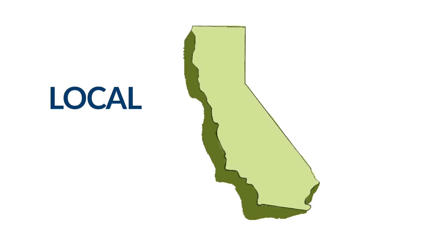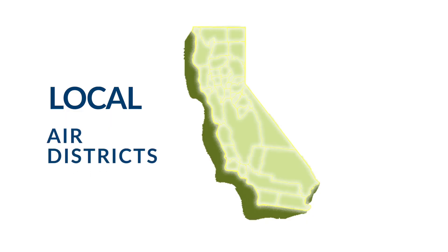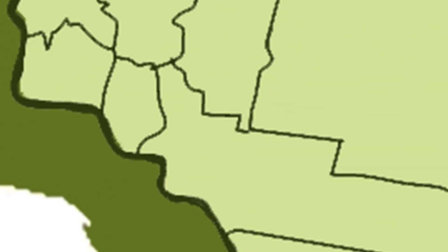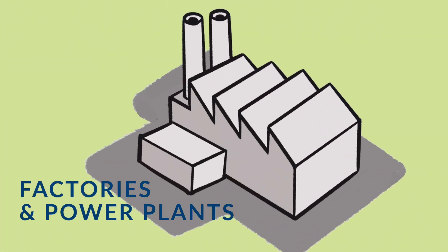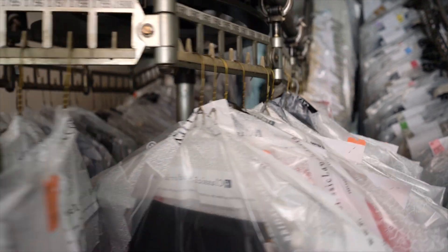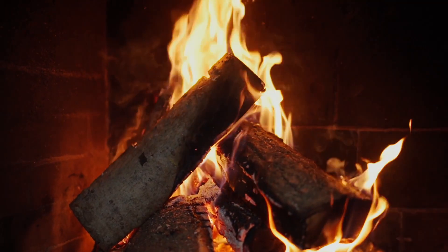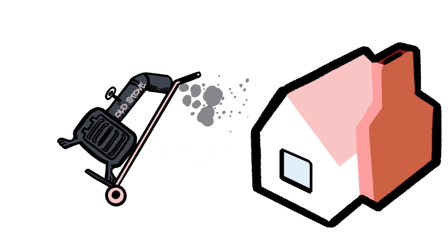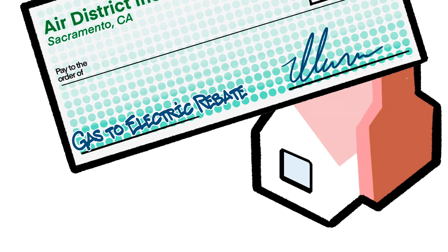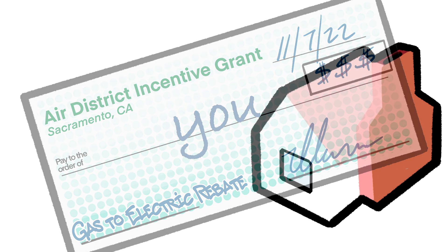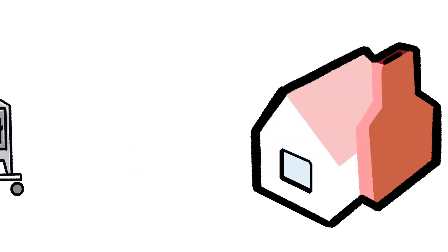At the local level, 35 air districts are responsible for limiting air pollution from local sources, including large sources like factories and power plants, as well as small sources like dry cleaners and even fireplaces. Each air district implements local, state, and federal regulatory and incentive programs, including funding to reduce local emissions exposure.